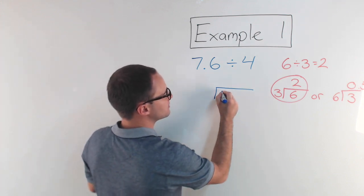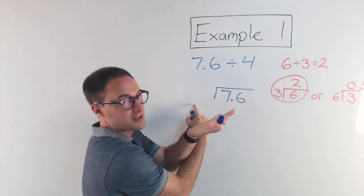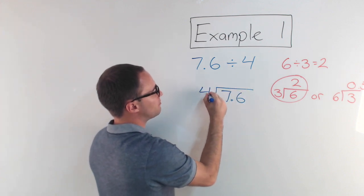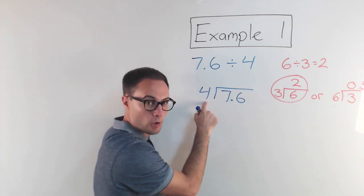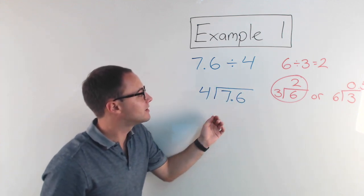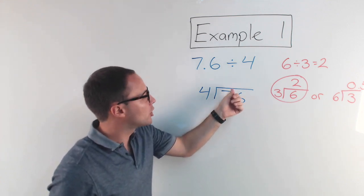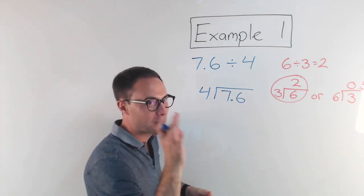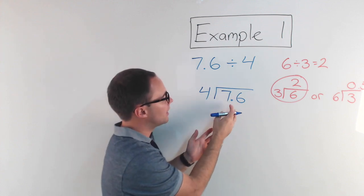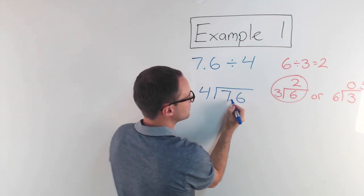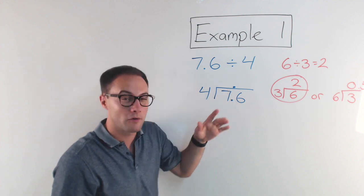So here, 7.6 is going on the inside, just like the 6 went there. You're basically crisscrossing — 4 is what you're dividing by, so 7.6 divided by 4. Now, when you're dividing with decimals, the decimal point goes directly above where it is in your problem — in 7.6 — so it goes directly above, and that's where it's going to be in your quotient. I like to put it right off the bat so I don't forget.